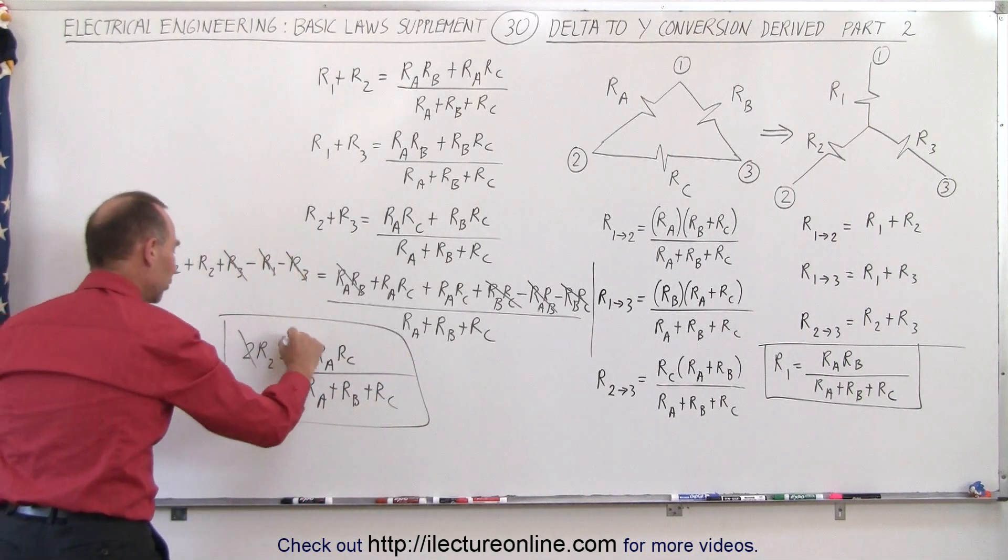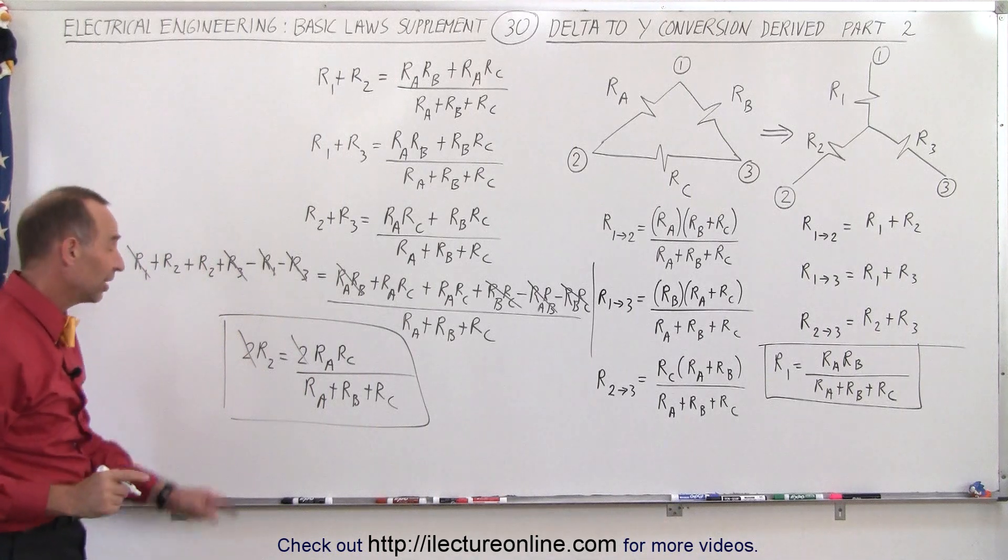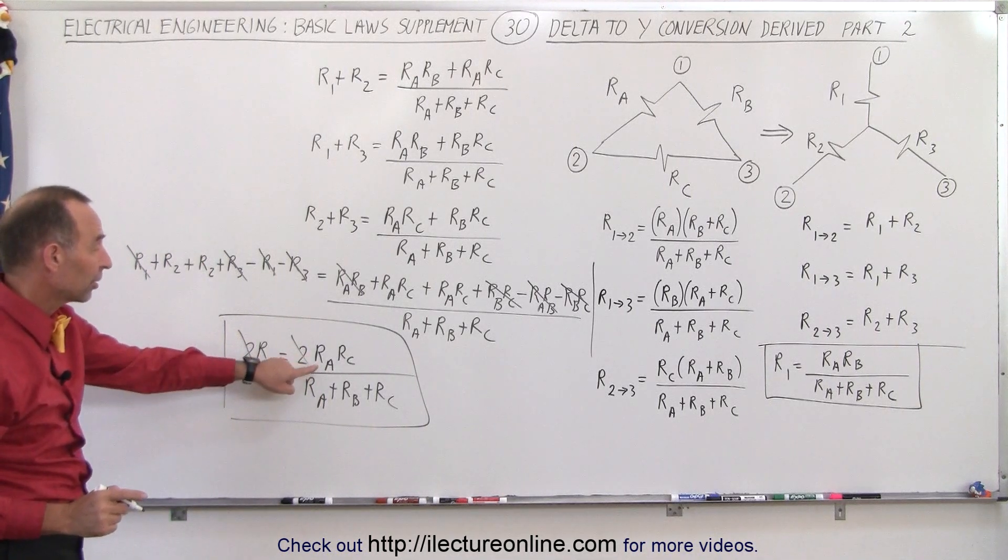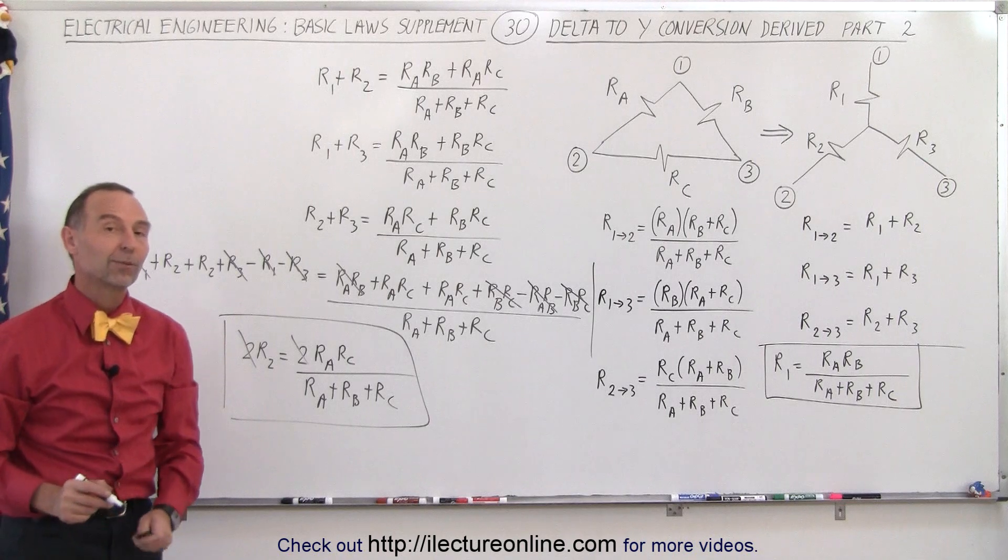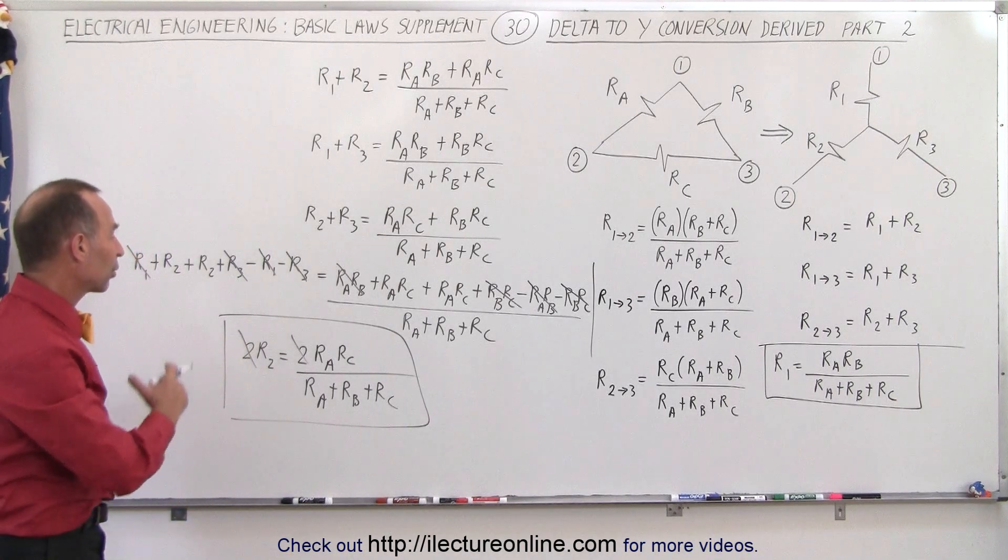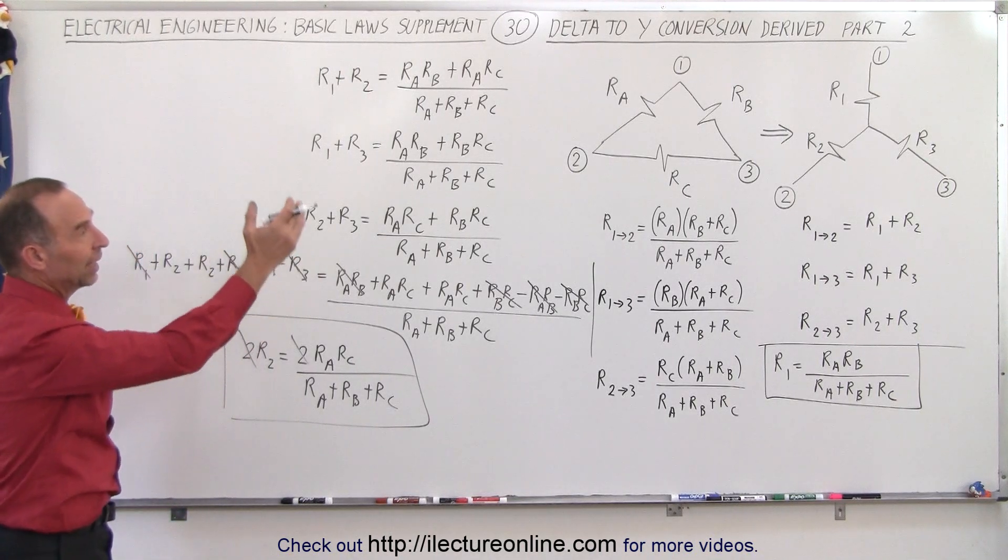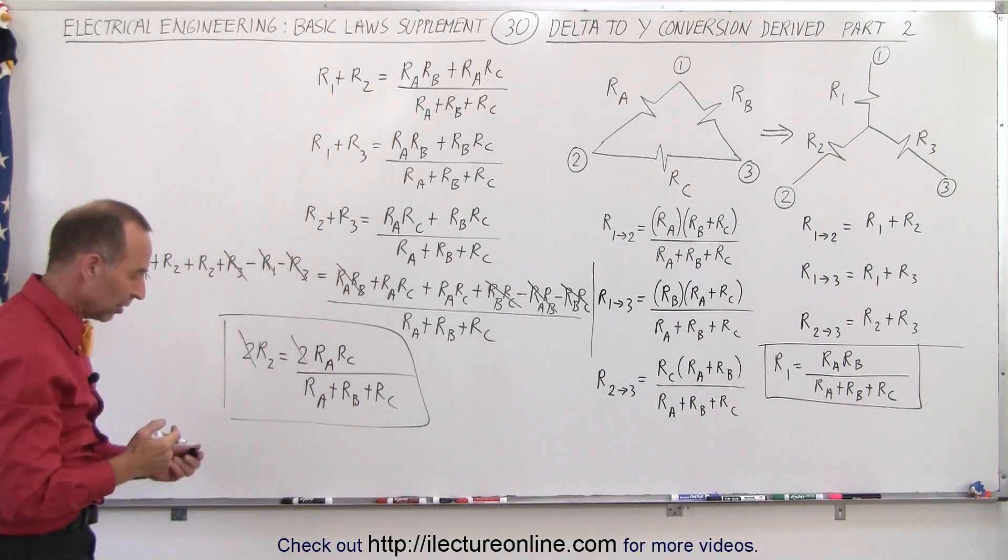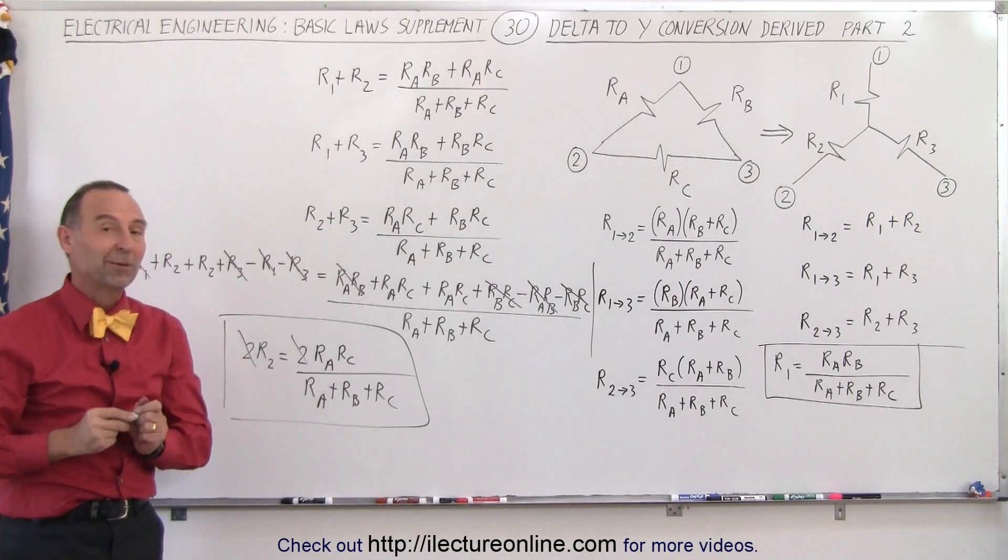If we get rid of the twos on both sides, we can now see that R2 is equal to the product of Ra times Rc, divided by the sum of the three resistors. And that's how we find the equivalent resistance of R2 in the Y circuit as compared to the delta circuit. And that's how it's done.